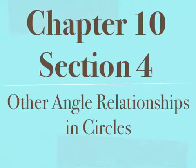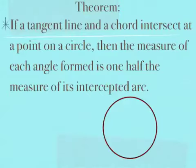Chapter 10, Section 4: Other Angle Relationships in Circles. Our first theorem in Section 4 states that if a tangent line and a chord intersect at a point on a circle, then the measure of each angle formed is one-half the measure of its intercepted arc.